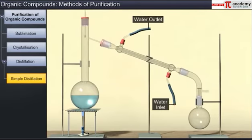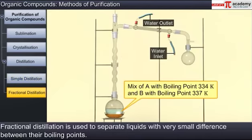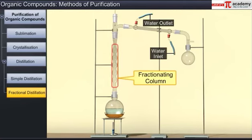Simple distillation cannot be used for the separation of liquids which do not differ much in their boiling points. Another technique called fractional distillation is used to separate liquids which have a small difference in their boiling points. In this technique, a fractionating column is fitted over the mouth of the round bottom flask. The purpose of the fractionating column is to increase the area of the cooling surface and to provide hurdles to the ascending vapors.